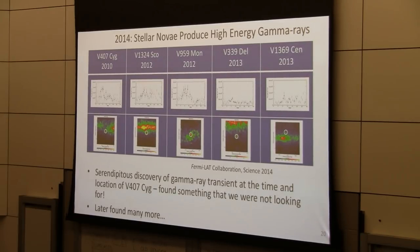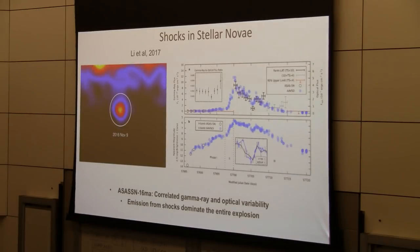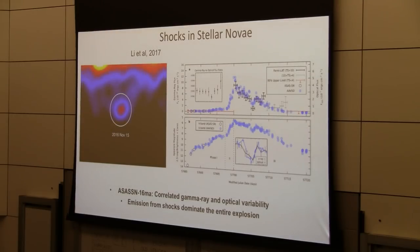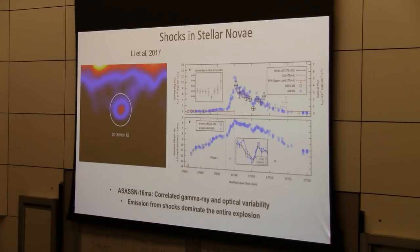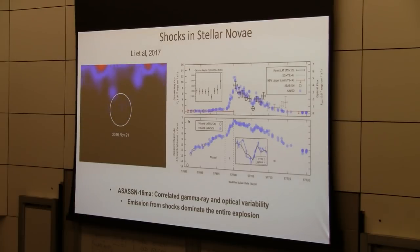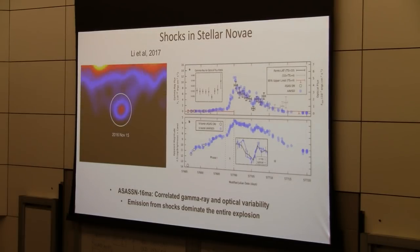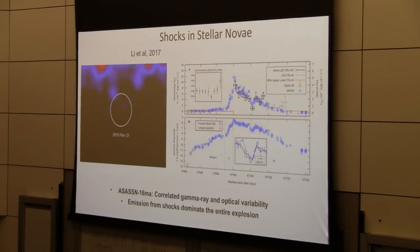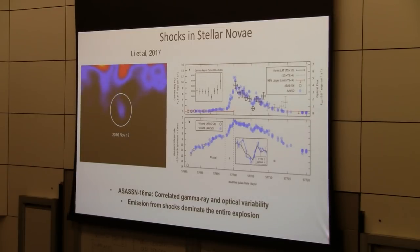In one of our most interesting novae, V339 Del, we have very nice gamma ray observations that show a rapid increase. As you're tracking the gamma rays as a function of time, we see the gamma ray flux drop and rise again. Optical observations at the same time show the same drop and rise. Since the gamma rays can only be produced by non-thermal particles accelerated in shocks in the system, seeing the same behavior in the optical is telling us that in these systems, most of the emission is from shocks.